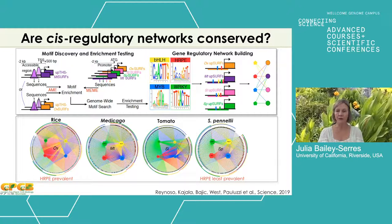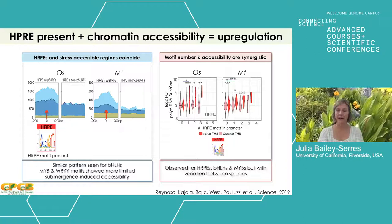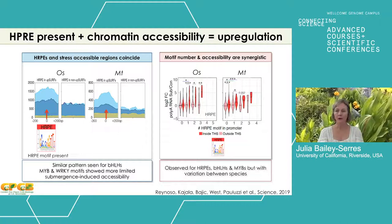The other three regulatory elements were oftentimes present in promoters that also had HRPEs. Mauricio and Marco showed that the HRPE coincides with regions of increased chromatin accessibility in both species, and this was also seen for genes with bHLH motifs presumably regulating their expression. Very strikingly, when evaluating mRNA induction in response to two hours of submergence versus the number of HRPE motifs and their presence within an ATAC-seq peak, increasing HRPE number and accessibility appeared synergistic with upregulation.